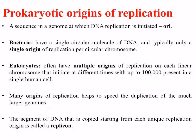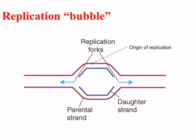The segment of DNA copied starting from each unique replication origin is called a replicon. The origin of replication forms what's called a replication bubble — the DNA can be replicated in two different directions, each in a 5' to 3' direction because the strands are anti-parallel. The red strand indicates the parental DNA and the blue or purple strand indicates the daughter or newly synthesised strand — one going to the right and one going to the left.